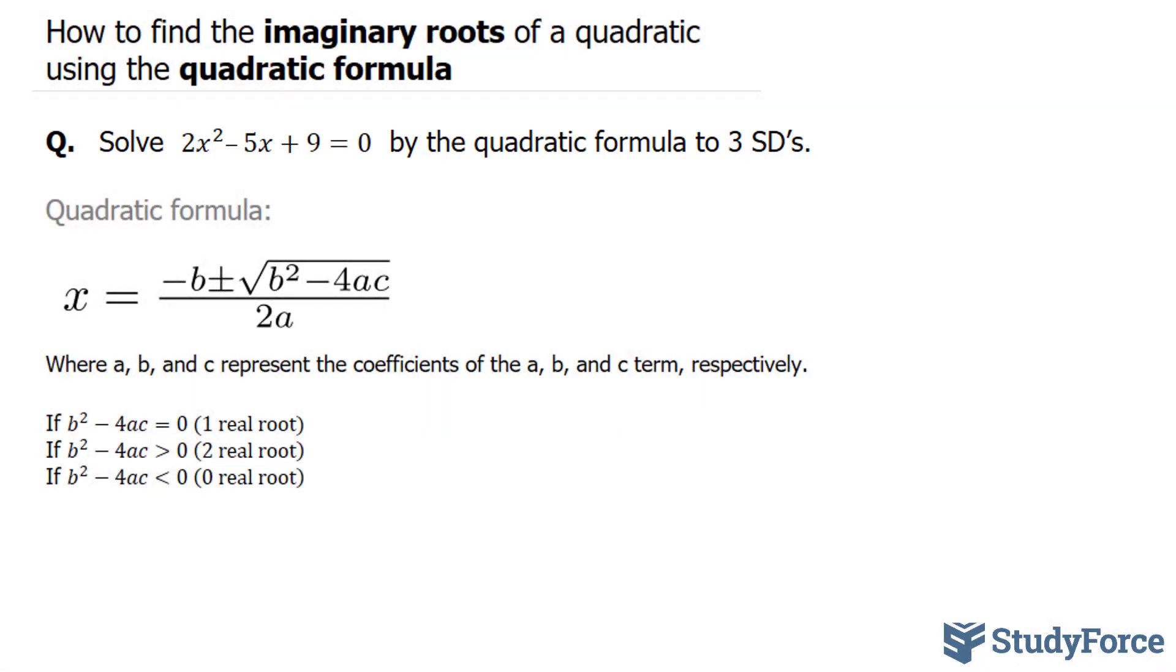Remember that this part of the quadratic formula, the square root of b squared minus 4ac, is referred to as the determinant, and it actually tells us how many roots we'll end up having.